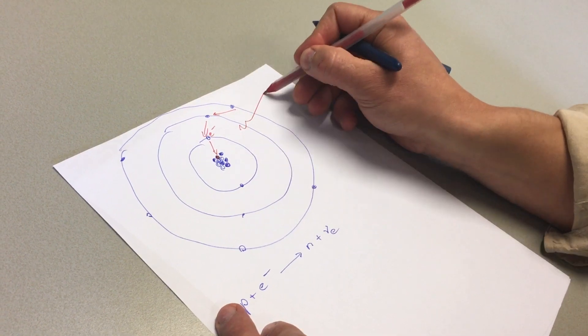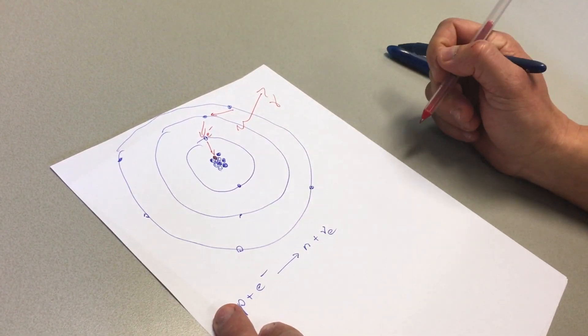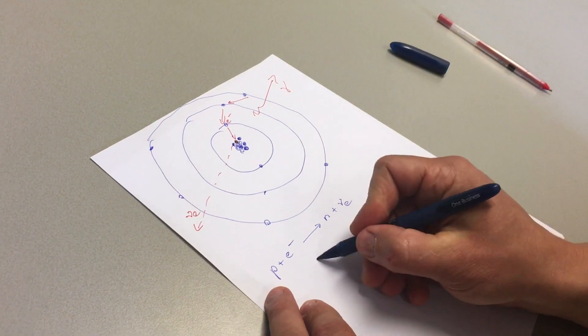When this happens, you emit light x-rays. This is called electron capture.